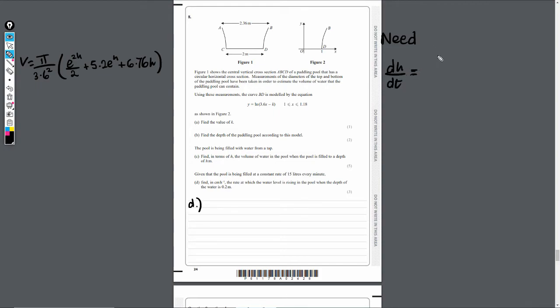So dH over dV, I can obtain that by differentiating V here and then taking the reciprocal. And my dV by dT, they already gave us that information. They're telling us that it's filled at a constant rate of 15 liters every minute. So we can come to dV by dT in a minute. First, we need to differentiate this.